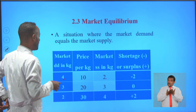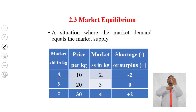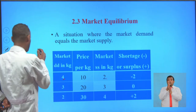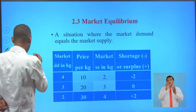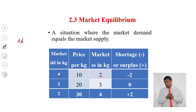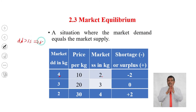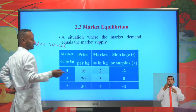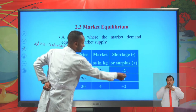In this case, the market demand is over market supply. That means there is an excess of market demand over supply, and if there is an excess of market demand over supply, then there is shortage. So the shortage is 2 kilograms of orange.